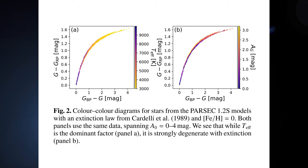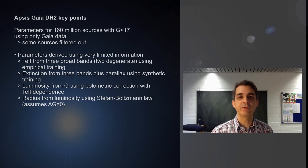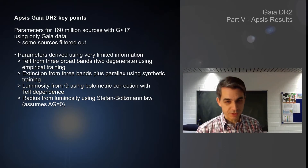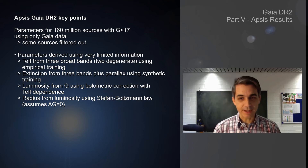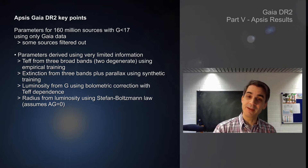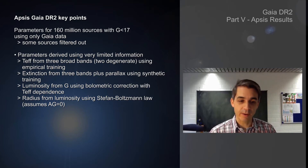The signal we're picking up when we report an extinction is actually the faintening or dimming of the star due to the intervening dust. We report both an extinction and a reddening, but in both cases the signal is due to the dimming of the star from the dust. We get that using the three-band photometry and the parallaxes.